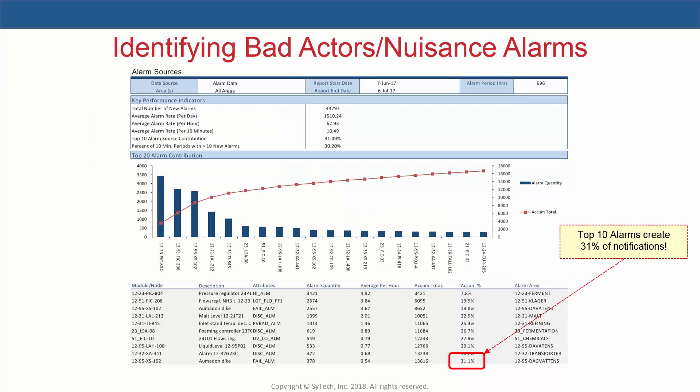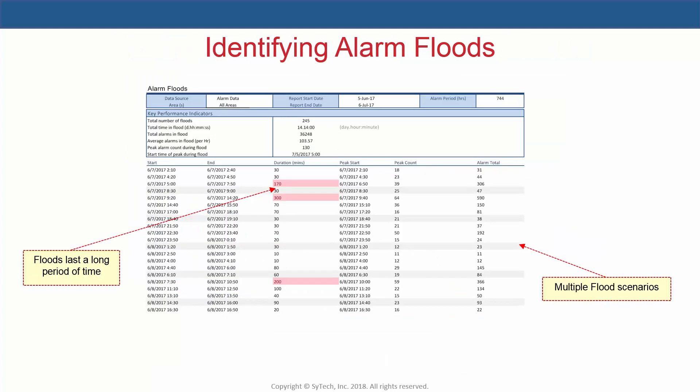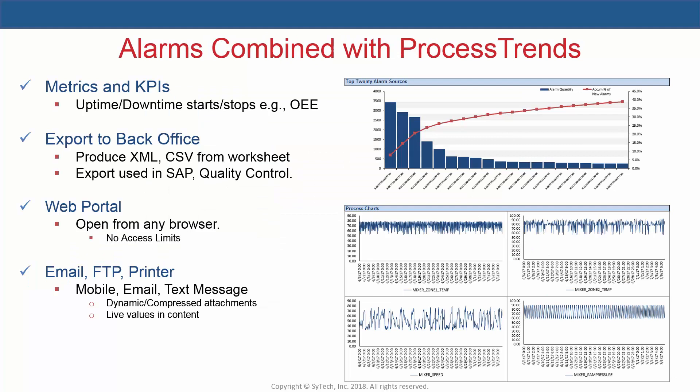The alarm sources report visualizes the top contributing alarms in the system, which can help indicate which alarms are distracting operators the most. The floods report shows periods of high alarm activity, which can indicate when operators are being overwhelmed. Another example shows a custom report where the top 20 alarm sources are combined with data from a process historian.